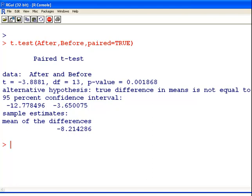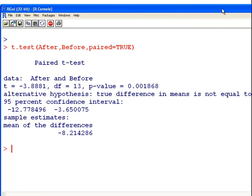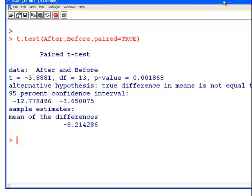And essentially is there an improvement, lessening, so we're looking for a negative mean value. The p-value, the alternative hypothesis, true difference in means is not equal to 0. What we have there is a mean of the differences and a 95% confidence interval for those differences.